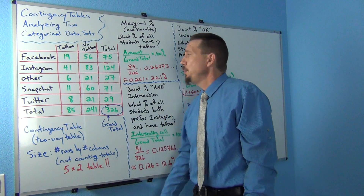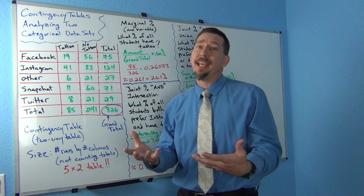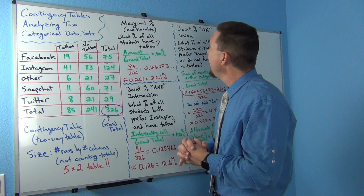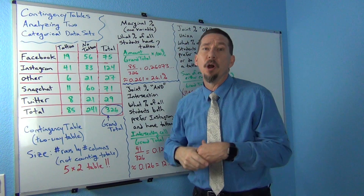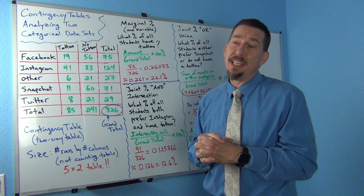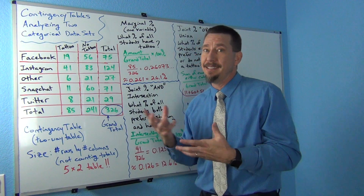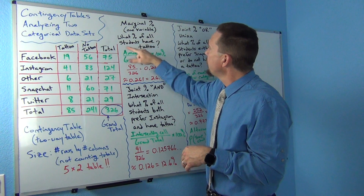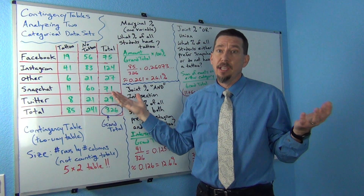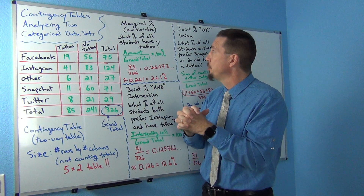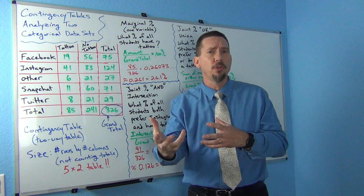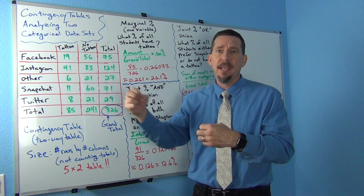When analyzing two categorical data sets, it's all about percentages. The first type is called a marginal percentage, marginal probability, or marginal proportion — all referring to the same idea. A marginal percentage involves only one of the two variables. For example: 'What percentage of all the students have a tattoo?' This only mentions tattoo, not social media, which is a classic sign of a marginal percentage. The phrase 'of all the students' tells us to use the grand total.